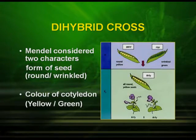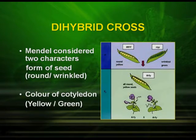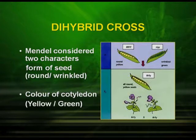What is the meaning of dihybrid cross? Dihybrid means the plants that are differing in two characters. So we cross a plant which differs in two characters. Mendel, in his dihybrid cross, considered two characters: the form of seed — whether it was round or wrinkled — and the color of cotyledon — whether it is yellow or green. When he crossed the two plants, let us see and analyze the result.